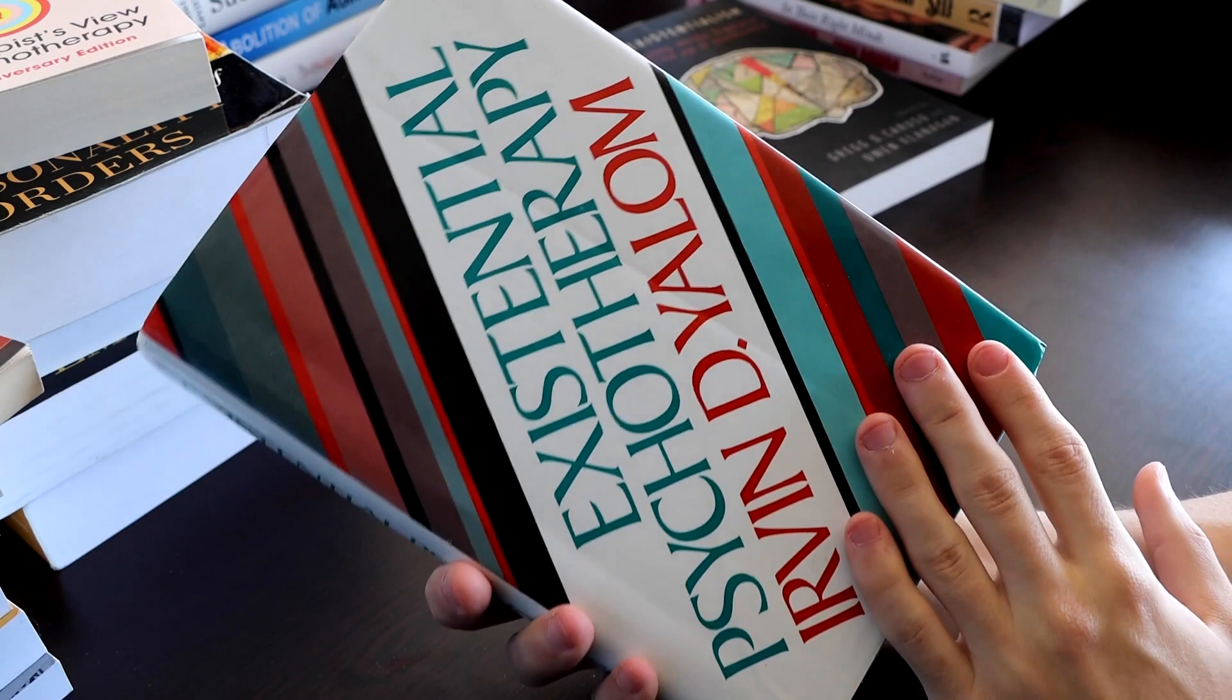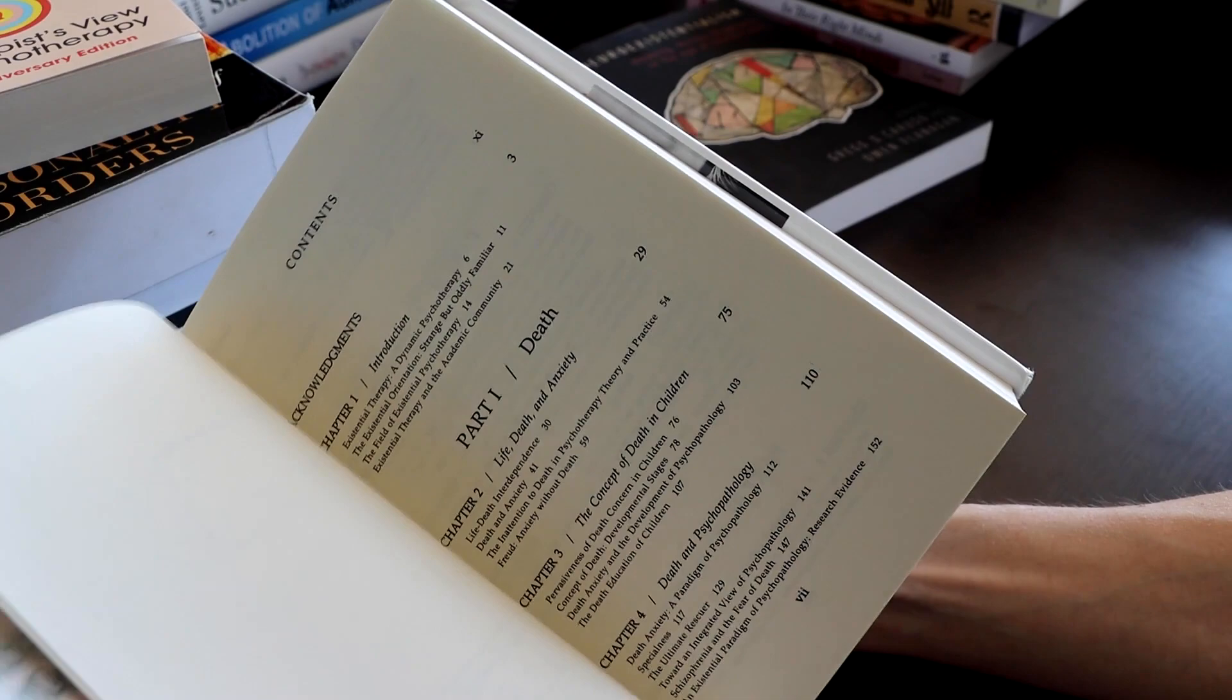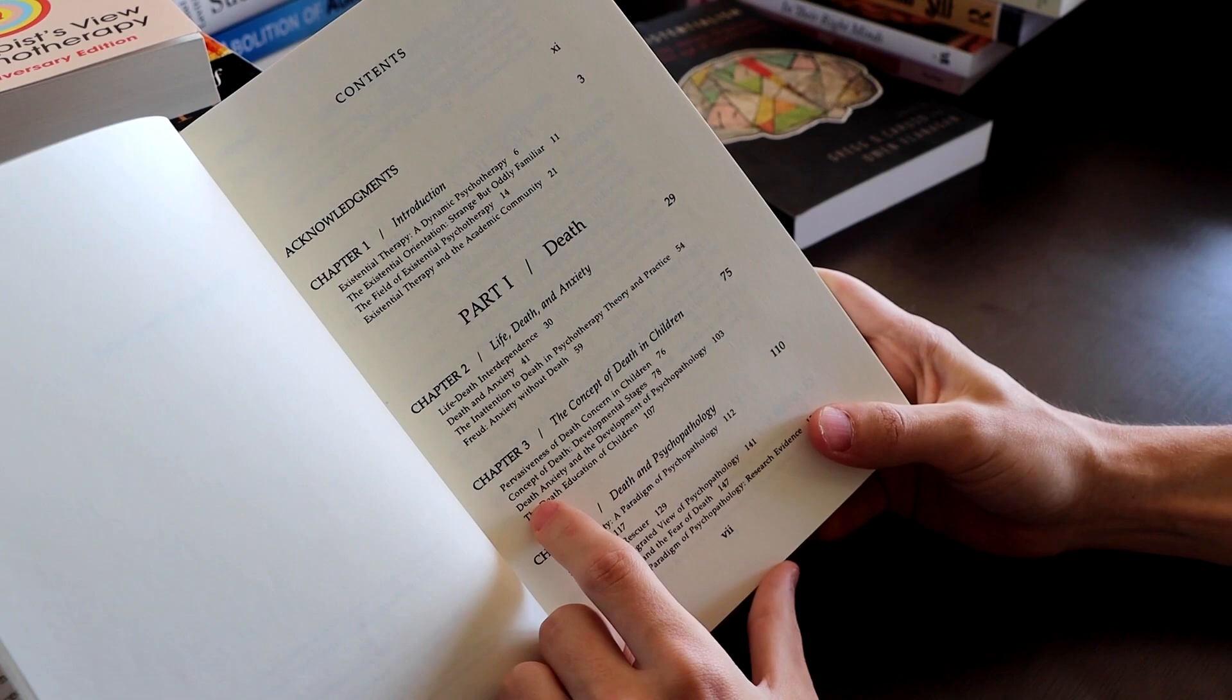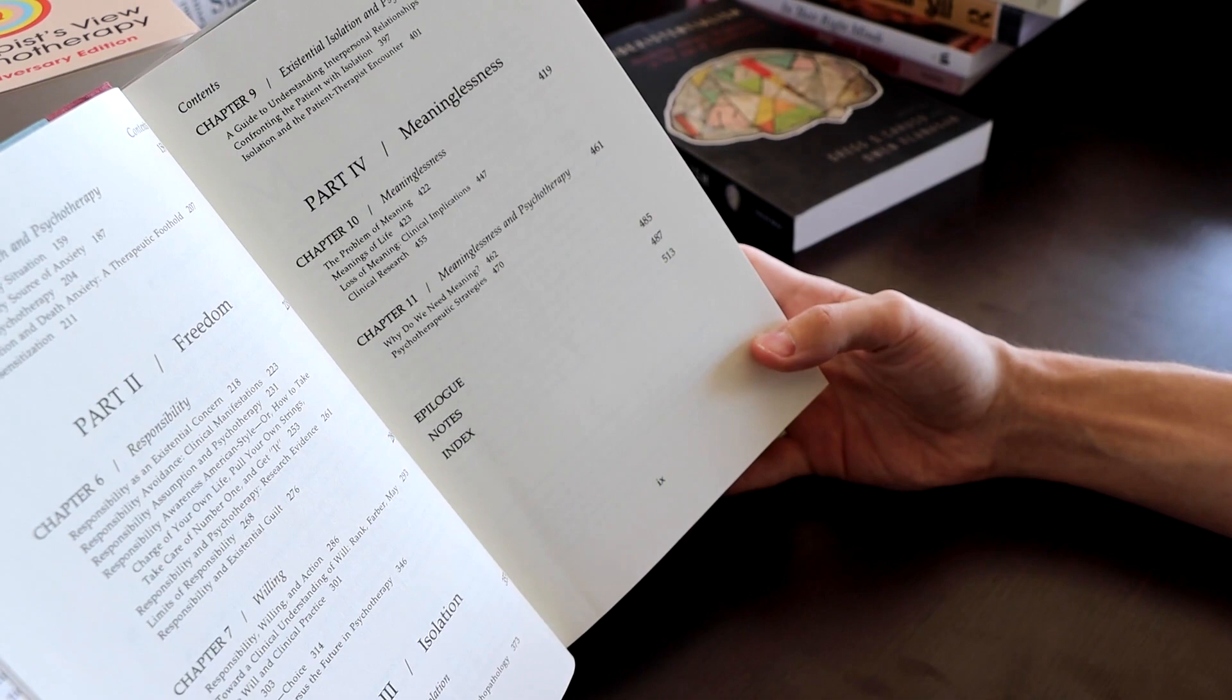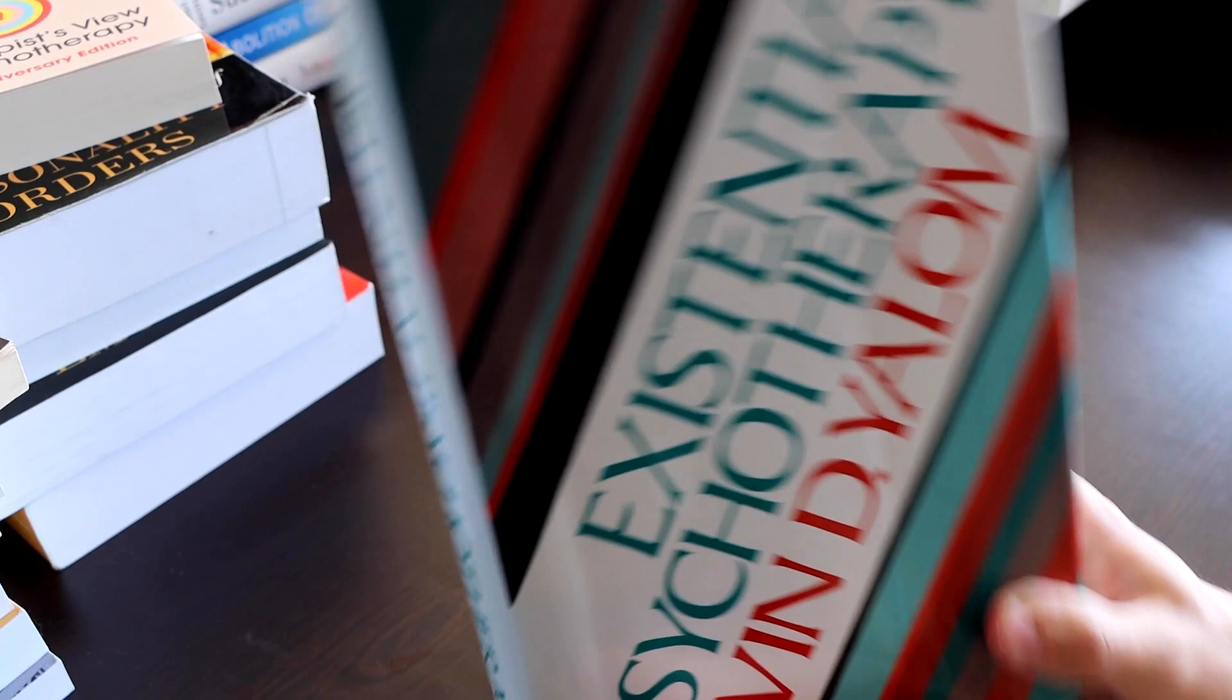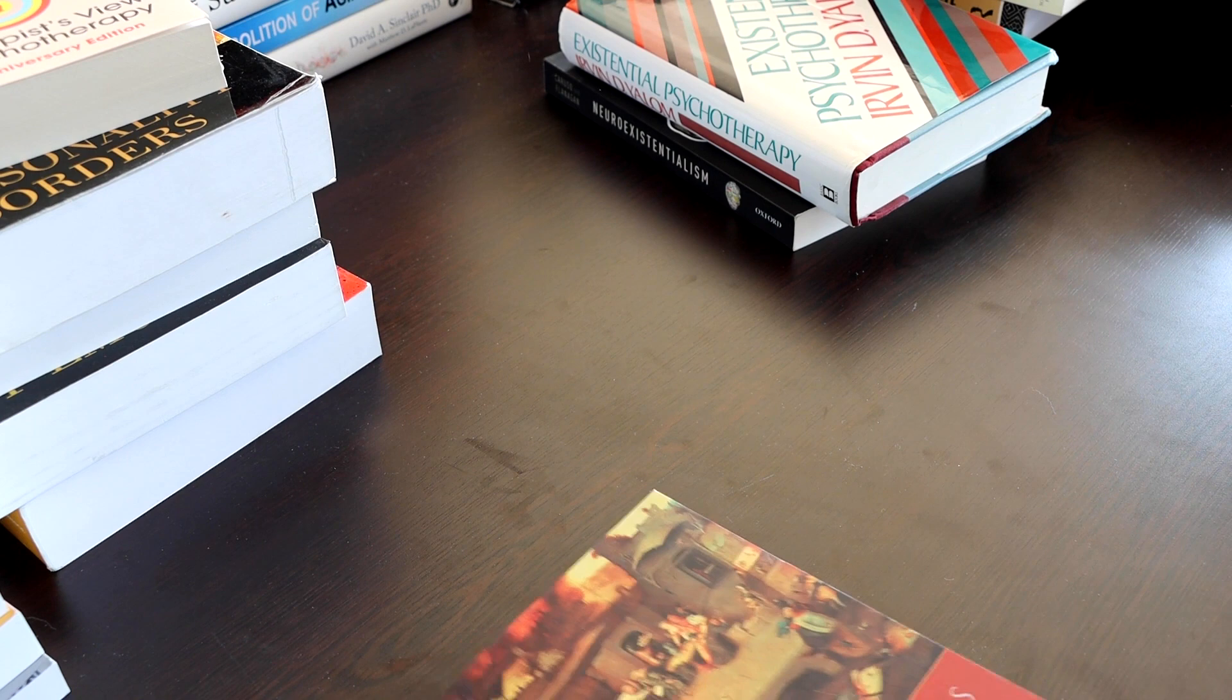Existential Psychotherapy. This guy was a big influence on Jordan Peterson. And in fact, this guy came from an era of thinking that was existential psychotherapy. And you can tell that this era had a big influence on Peterson by looking at the table of contents, like life, death, and anxiety, the concept of death in children, death in psychopathology. There's a whole section about responsibility. Responsibility as an existential concern, responsibility avoidance, clinical manifestations. This era of psychotherapy was really big on responsibility and purpose. And if you've read any of Jordan Peterson's books, it's all about responsibility and purpose.